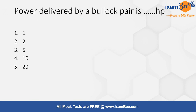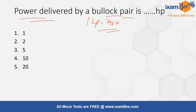The next question is: the power delivered by a bullock pair is dash horsepower. As we know, 1 horsepower equals 746 watts. Options are 1, 2, 5, 10, or 20. The correct answer is option 1, that is 1 horsepower. For an average man it is 0.1 hp and for an average woman it is 0.05 hp.